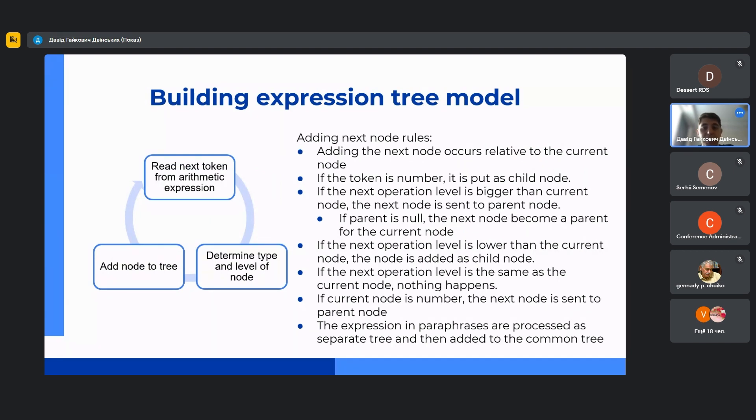To construct an expression tree, the input string is analyzed left to right, generating tokens, each of which represents a distinct type of information such as operations, numeric values, or brackets. All tokens are processed sequentially in a single loop. When an opening bracket token is uncovered, the following tokens form a separate subtree. The main rule is to add the operation with lower level as a parent node and the operation with high level as child node.